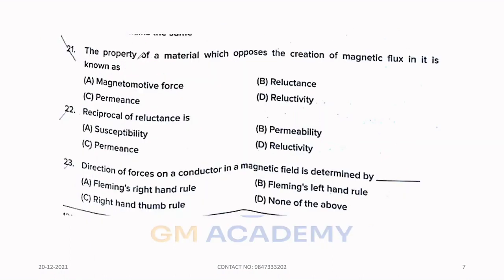Twenty-first question, the property of a material which opposes the creation of magnetic flux in it is known as, option B, reluctance. The reciprocal of reluctance is, option C, permeance.